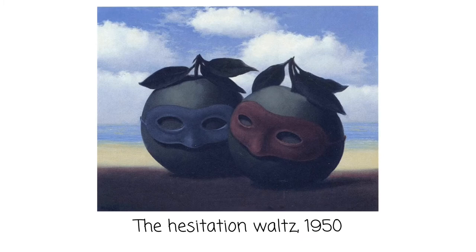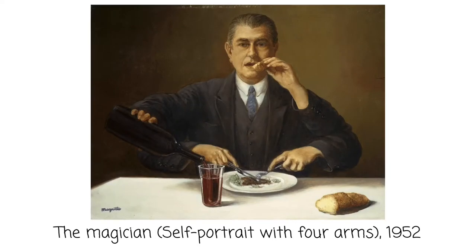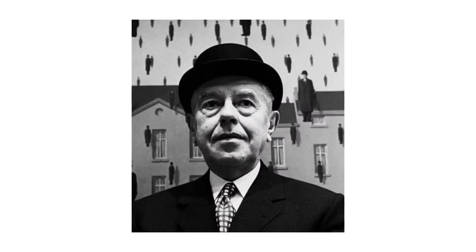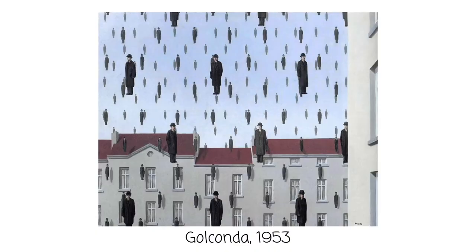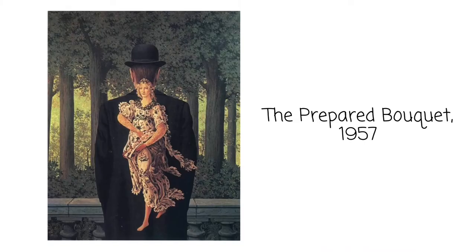Rene Magritte used many recurring images in his surrealist artwork, such as apples, bowler hats, trains, castles, and birds. He loved the sea and the sky, and those images are present in many of his paintings. He also incorporated words into many of his paintings, and he stated that he wanted his art to challenge the real world and challenge perception.